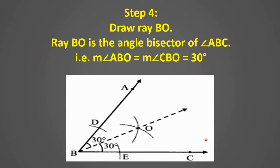Step 4: draw ray BO. Ray BO is the angle bisector of angle ABC. Measure angle ABO equals measure angle CBO equals 30°. This is how we draw the bisected angle of 30°.